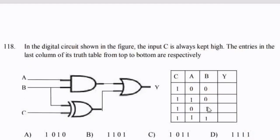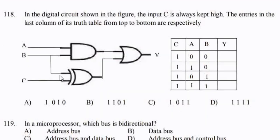In the digital circuit, the input C is always kept at high. The entries in the last column of the truth table from top to bottom are: with A=0,B=0 → 1; A=1,B=0 → 0; A=0,B=1 → 1; A=1,B=1 → 0. This corresponds to an exclusive OR gate. Option B.